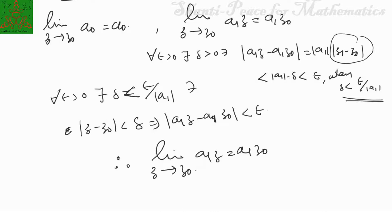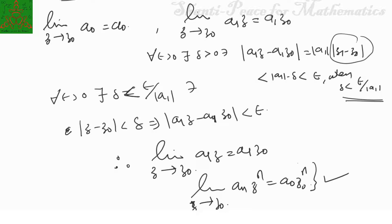Similarly, using the product rule, the limit of aₙzⁿ as z → z₀ equals aₙz₀ⁿ. Since the product of two continuous functions is continuous — for example, z² is continuous — and the sum of continuous functions is continuous, we can conclude that every polynomial is a continuous function on the entire complex plane.